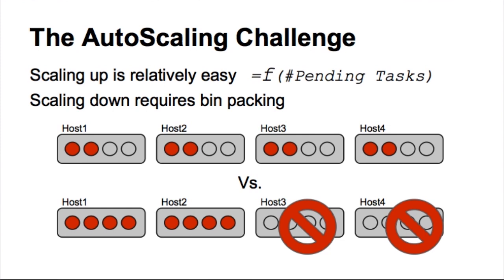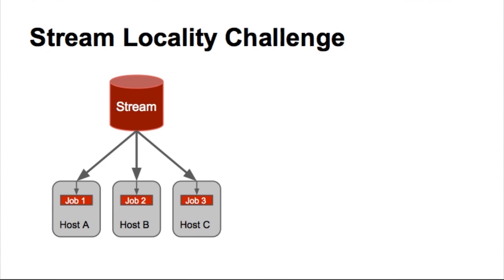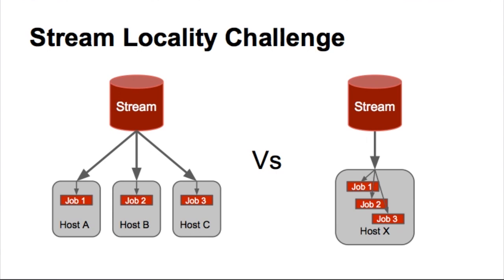Another is stream locality. So suppose we have three different jobs that are connecting into the same source data stream, they would have three different network connections into them so there's more bandwidth usage. But instead, if I were to schedule them on the same box, there's one network connection and this helps us scale quite a bit in terms of connecting to different real-time data streams.